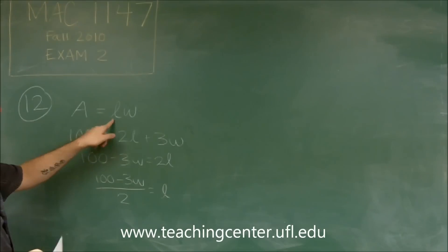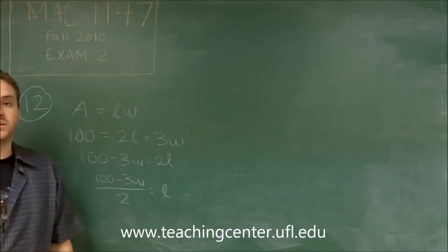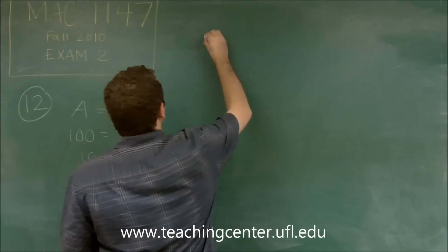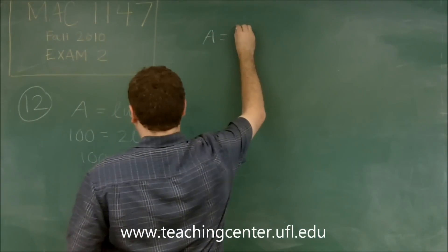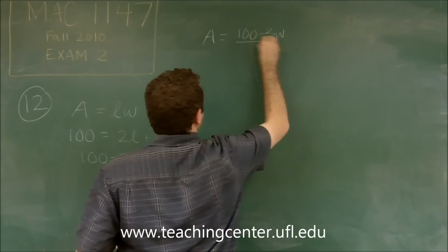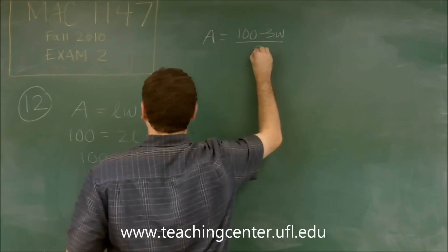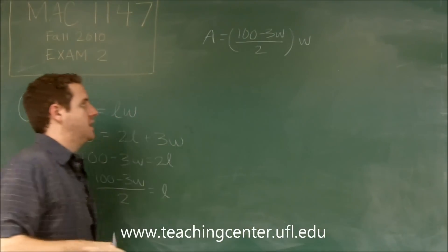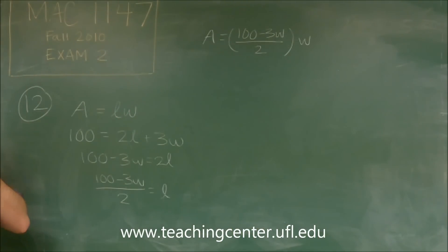We can plug that in here and now we will have a parabola because we're going to have W times W eventually. So if we plug that in, our area equation is now 100 minus 3W over 2 times W. So I just replace the L with what we substitute here.